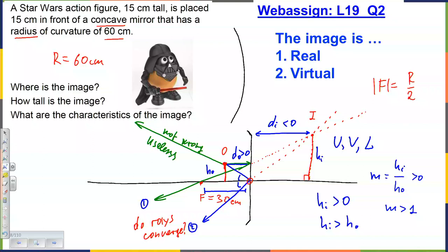If the object is between the focal point and the mirror, the rays do not converge — this is case three. Now let's solve it algebraically. Using 1/f = 1/d_o + 1/d_i with f = 15 cm and d_o = 15 cm: 1/d_i = 1/15 − 1/15... actually 1/d_i = 1/f − 1/d_o = 1/30 − 1/15 = 1/30 − 2/30 = −1/30, so d_i = −30 cm. The negative sign confirms the image is virtual.